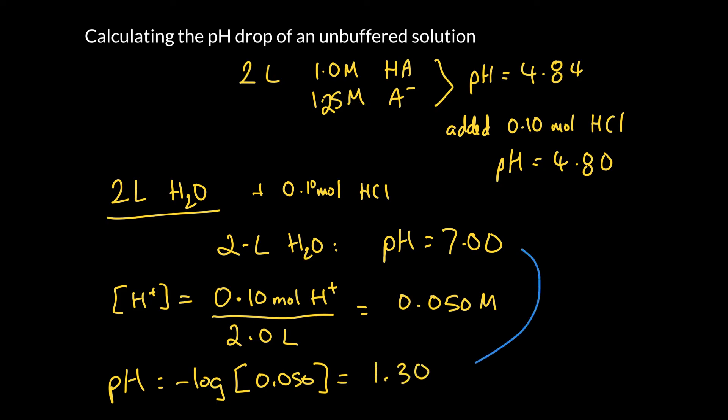So that's whopping right? So that has gone from 7 to 1.3. So that's a drop of 5.70 units in pH. Whereas when we added it to the buffer it only dropped by 0.04 pH units.